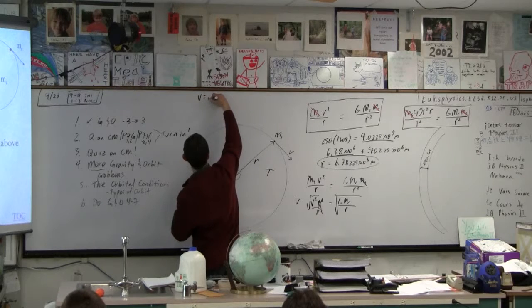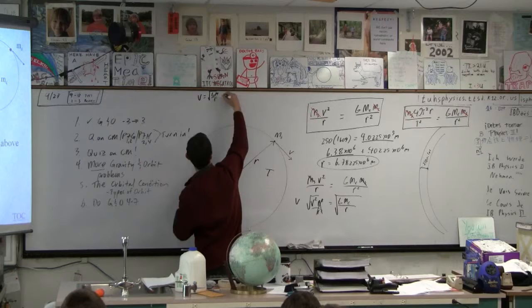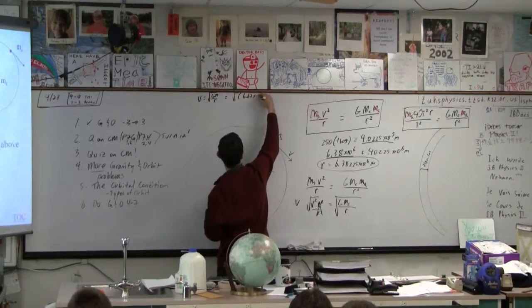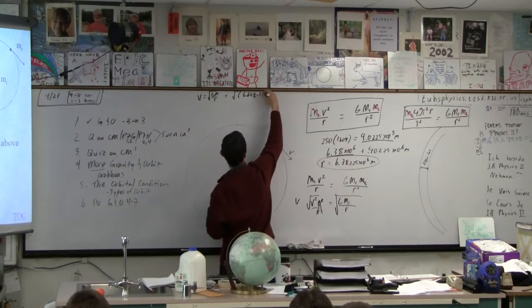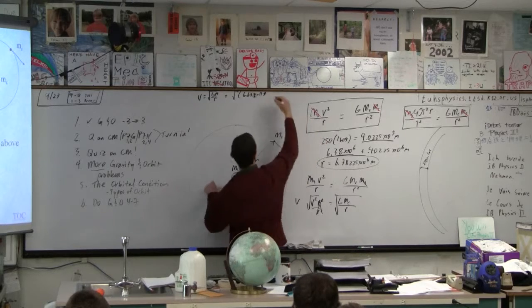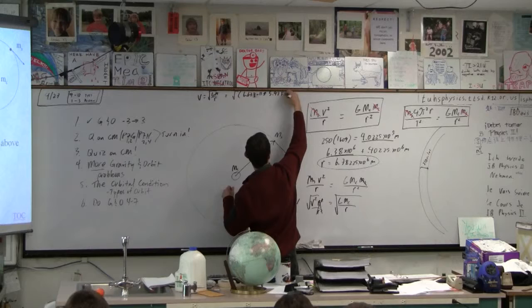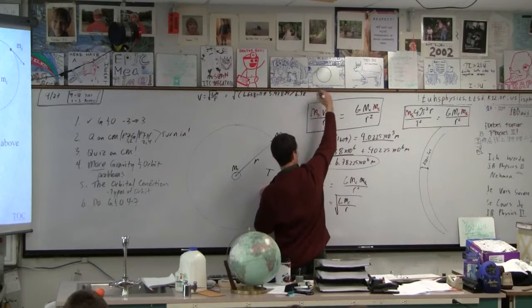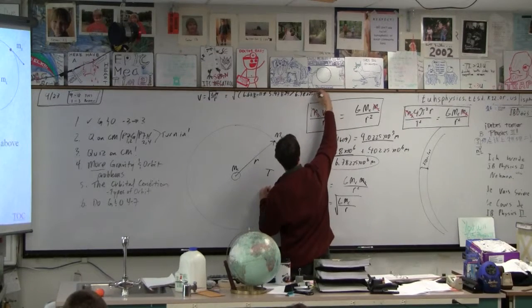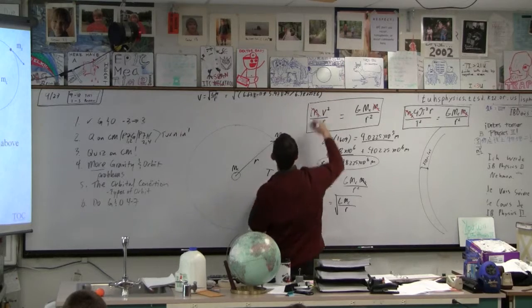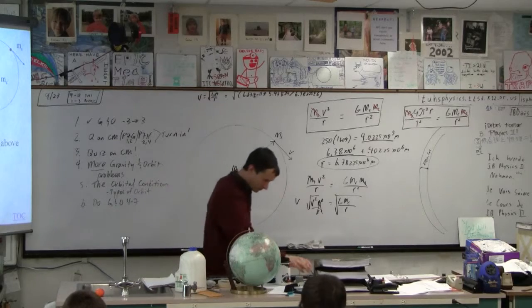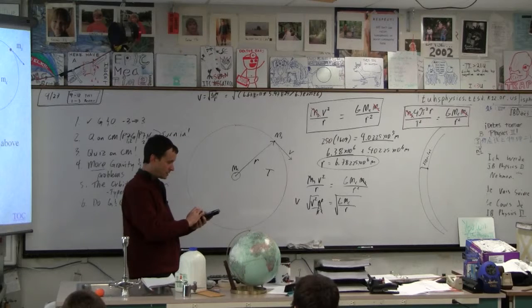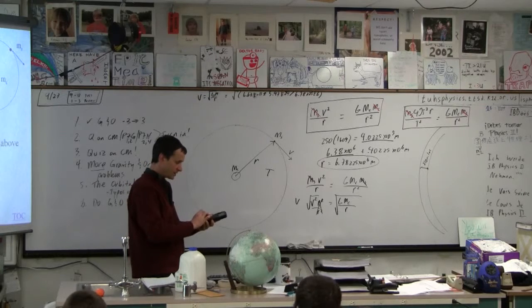So V is the square root of GM over R. That's going to look like the square root, left parenthesis, 6.67 times E negative 11 times, and then this is the Earth, right? So 5.97 E 24, divided by, and then what's our thing here? It's 6.78225 E 6, right parenthesis, and we've got it. When it's at an elevation of 250 miles, its velocity is the square root of 6.67 E minus 11.